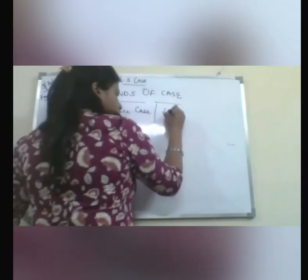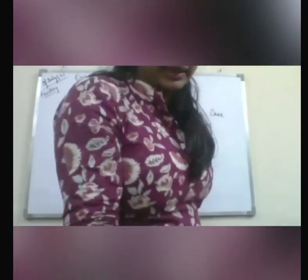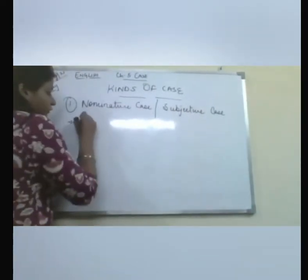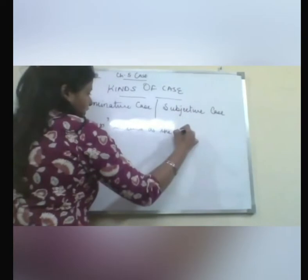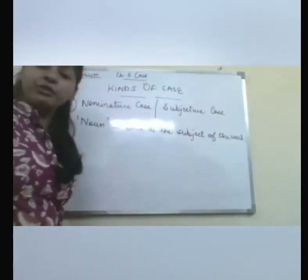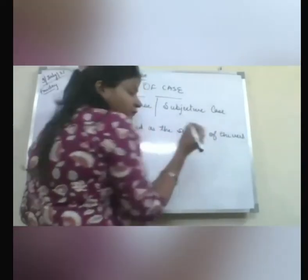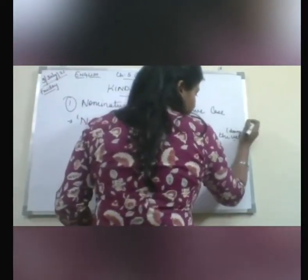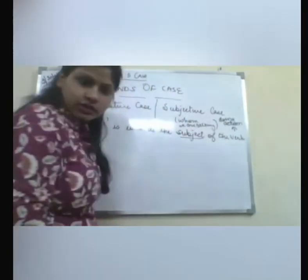Now let's go into the nominative or subjective case. What do you mean by the nominative case or the subjective? There are two points. First, when the noun is used as the subject of the sentence. Subject means the one about whom we are talking, and verb is the doing action. I hope you remember what a subject and a verb are before starting this chapter.